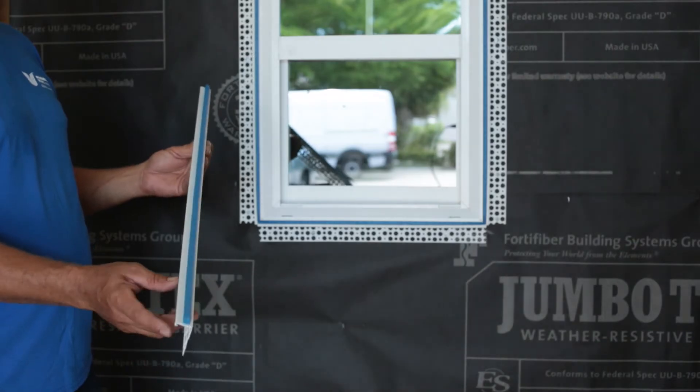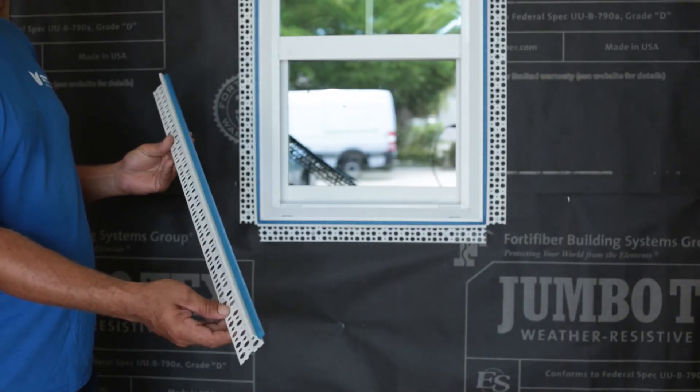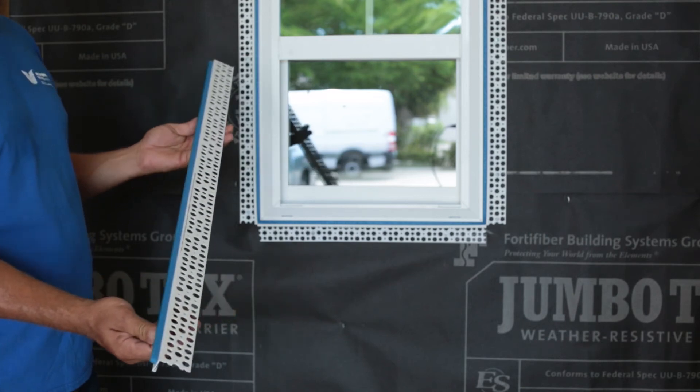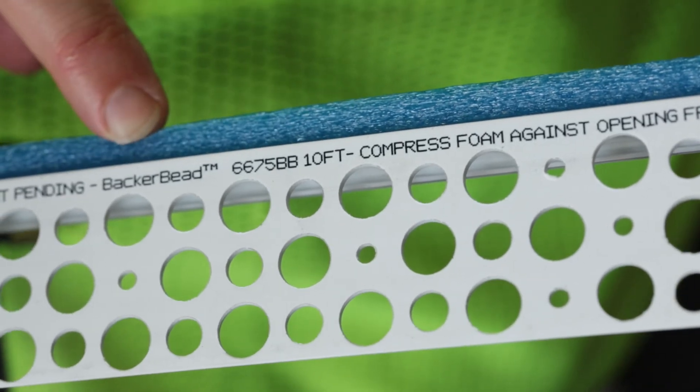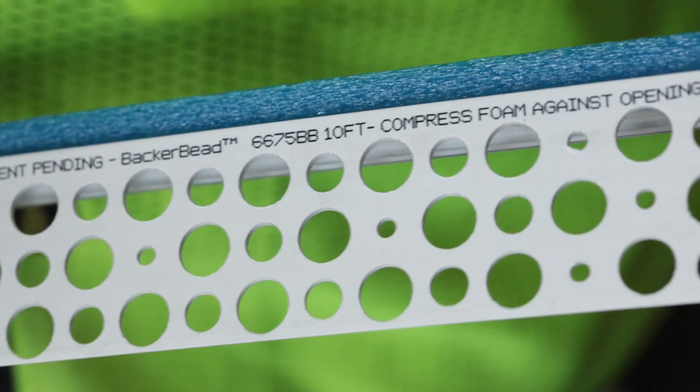Our backer bead is a PVC casing bead with closed cell backer rod factory applied at the manufacturing plant. Ink jetted onto each piece are very simple instructions for the installer.